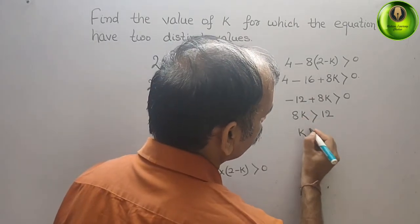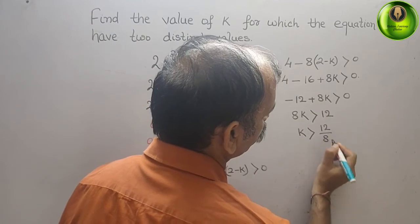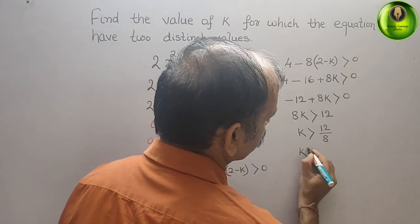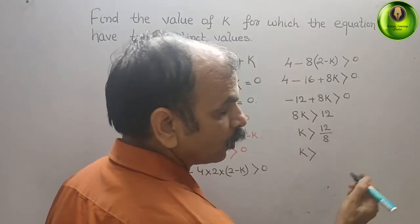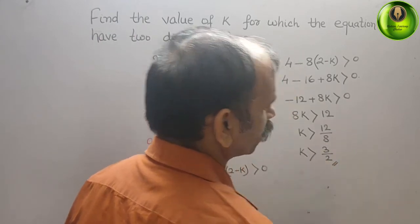Now what is your k? Divide both sides by 8. What we will get: k is greater than 12/8, which simplifies to k > 3/2. This is your answer.